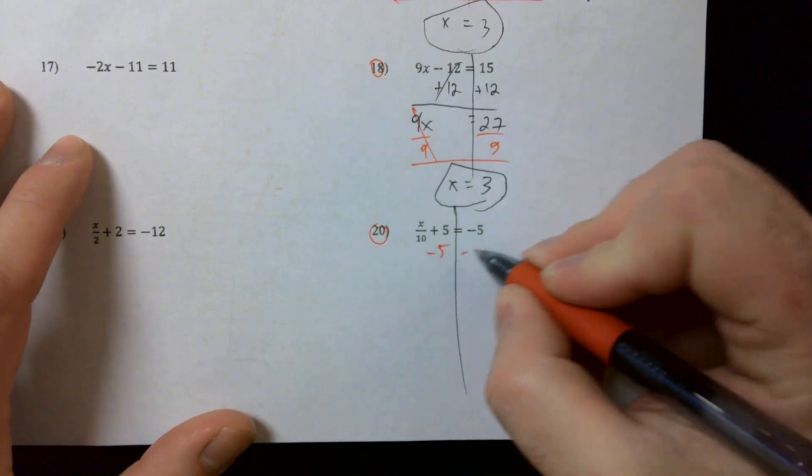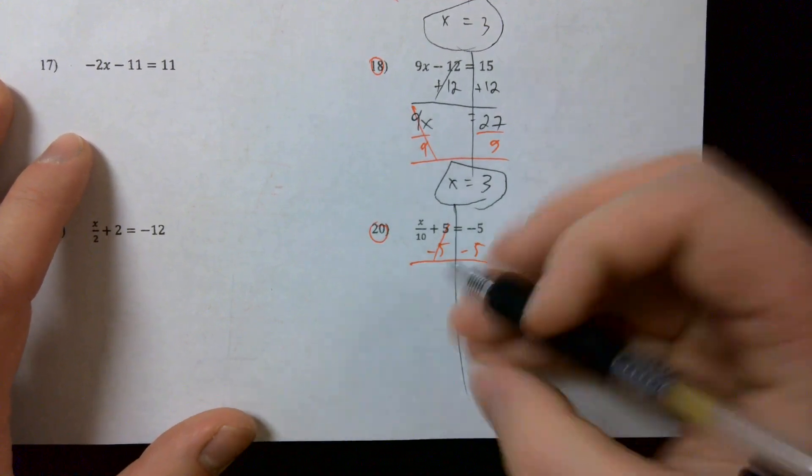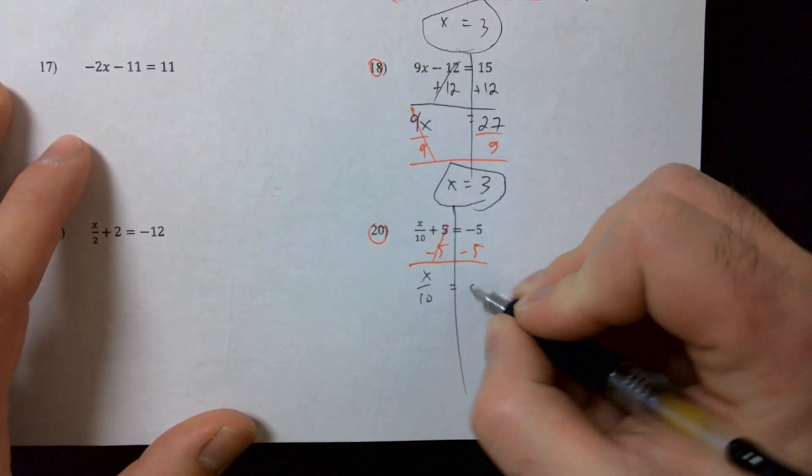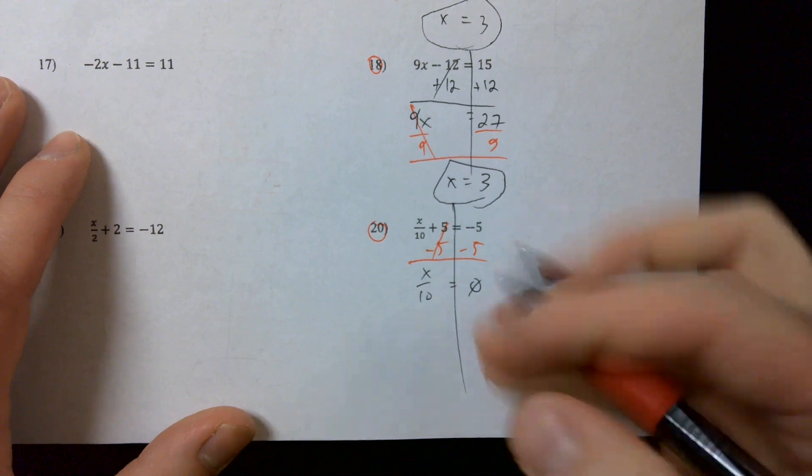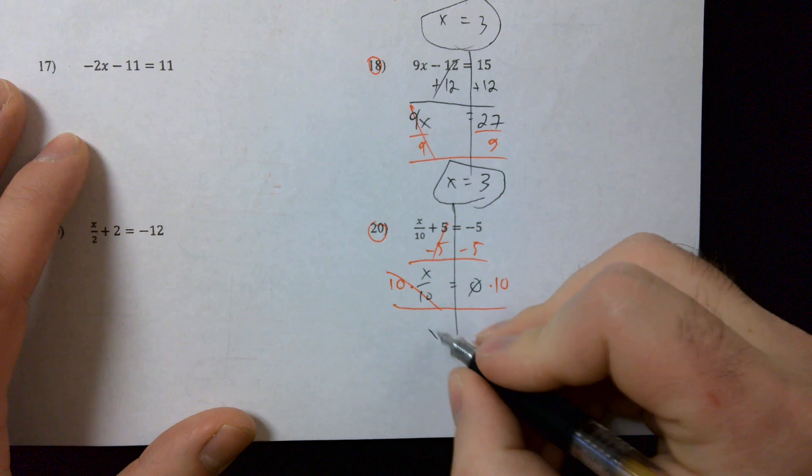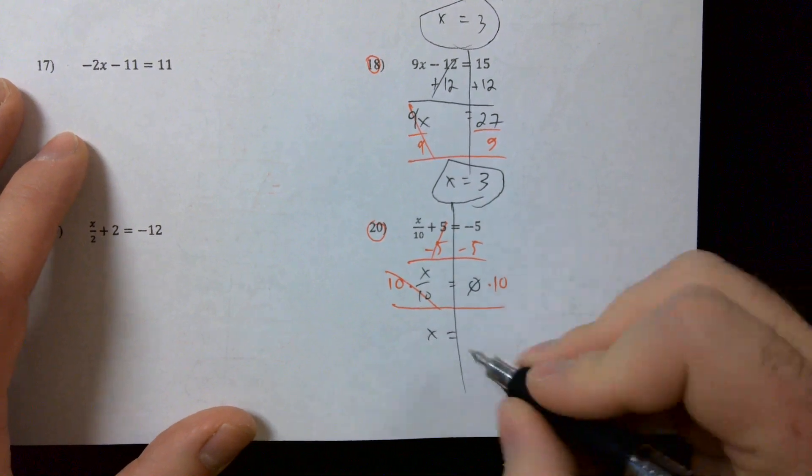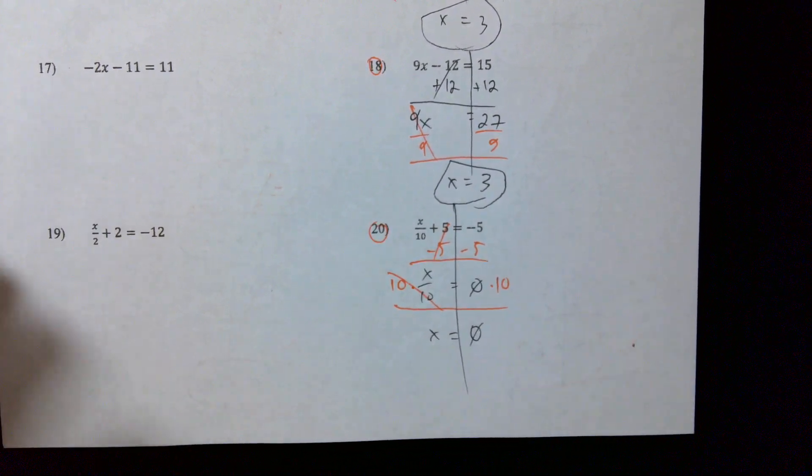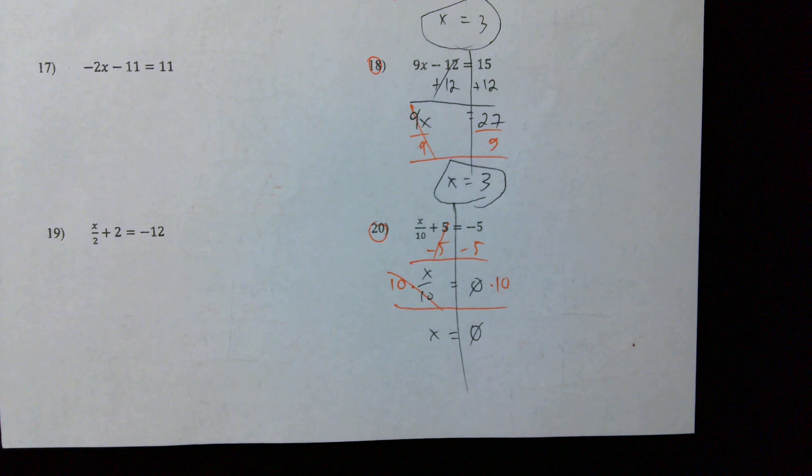Finally, I'm going to minus five. I get x over ten equals zero. And then multiply by ten. What's zero times ten? Zero times ten? Zero. Did I do something wrong? What did I do wrong? Negative, negative ten, negative ten. Negative ten. Oh, right here, negative five minus five. What should that be? Negative ten, negative ten, good.